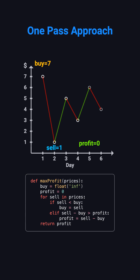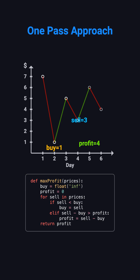On day two, the price drops to one, so we update buy to one. On day three, the price is five. Profit is five minus one, which is four, so we update profit to four. Day four, the price is three. Profit is two, smaller than four, no update. Day five, the price is six. Profit is five, update profit to five. Last day, the price is four. Profit is three, no update. The final answer is five.